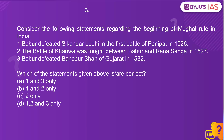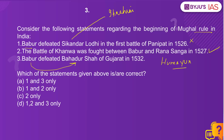Consider the following statements regarding the beginning of Mughal rule in India. First, Babur defeated Sikandar Lodi in the first battle of Panipat in 1526. Second, the battle of Kanwa was fought between Babur and Rana Sangha in 1527. Third, Babur defeated Bahadur Shah of Gujarat in 1532. Babur did win the first battle of Panipat in 1526, but he defeated Ibrahim Lodi, not Sikandar Lodi, so the first statement is wrong. The battle of Kanwa between Babur and Rana Sangha in 1527 is correct. But Babur did not defeat Bahadur Shah — it was Humayun who defeated Bahadur Shah of Gujarat in 1532, so that statement is also wrong.